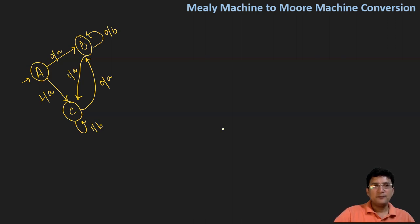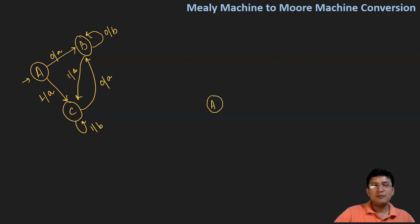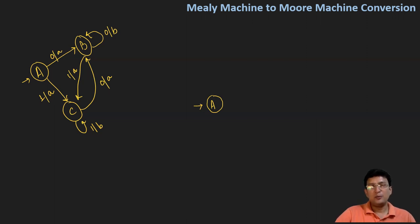For conversion, let us analyze these things. The first thing is that there is no transition which is ending at state A. So when I'm converting it to the Moore machine, there will be no output associated with state A, although we have learned that the output is associated with every state. But when we're converting, the output cannot be associated with state A, because there is no transition which is ending at state A.